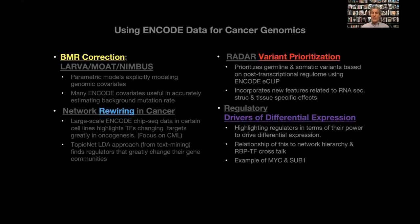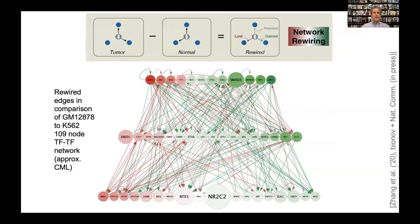The next topic is genomic rewiring in cancer. I'm going to focus on one particular transformation — from K562 to GM12878. GM12878 represents a normal blood cell, while K562 represents a white blood cell tumor. For these cell lines, where we have tremendous amounts of ENCODE TF ChIP data, we can look at the changes in regulation and how the regulatory network rewires.